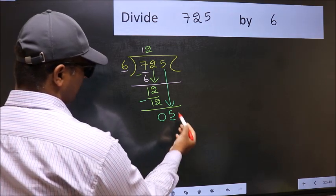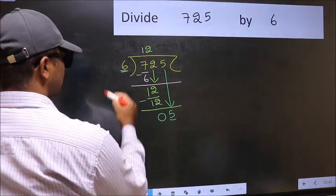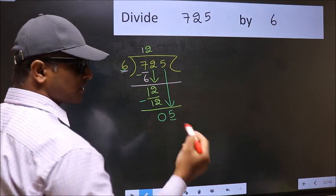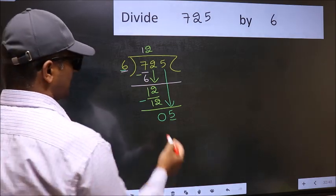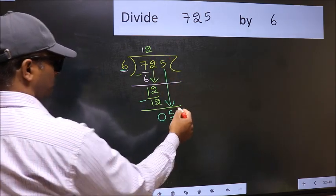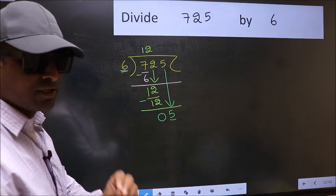Here we have 5 and here 6. 5 is smaller than 6. So what many do is, they directly put dot and take 0. Which is wrong.